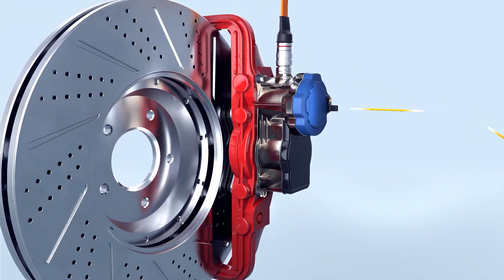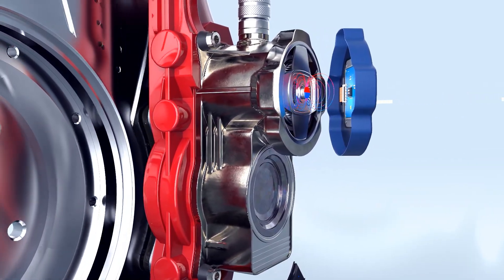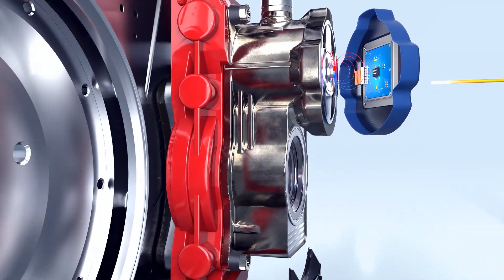The electromechanical brake leverages the electric motor's rotational motion to maneuver the caliper, applying clamping force to the brake disc.